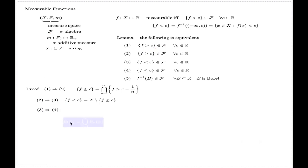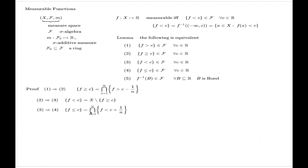Implication 3 to 4 is based on the identity that {x : f(x) ≤ C} is the countable intersection of the sets {x : f(x) < C + 1/n}. Again, because the sigma algebra is closed under countable intersection, the countable intersection of measurable sets is measurable. That finishes this implication.